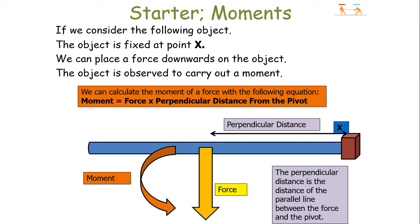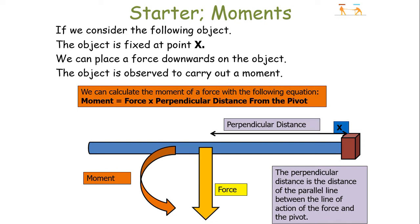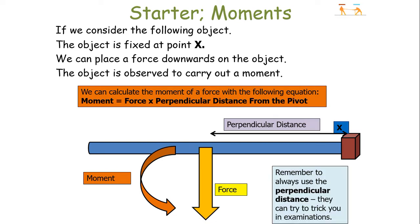We can calculate the moment of a force with the following equation: Moment equals force times perpendicular distance from the pivot. The perpendicular distance is the distance of a parallel line between the force and the pivot — or more precisely, the perpendicular distance between the line of action of a force and the pivot. Remember, in your examination you always have to use the perpendicular distance, as exam questions may try to trick you by giving you multiple distances.